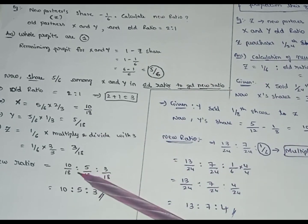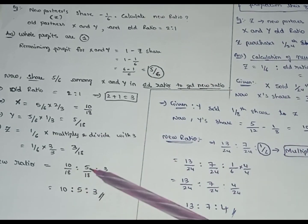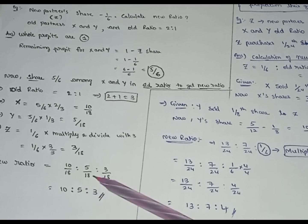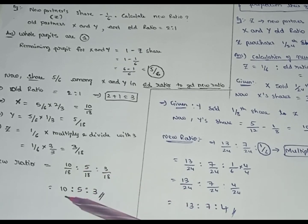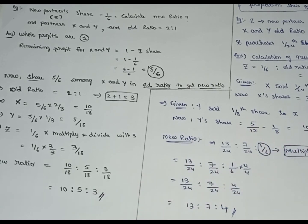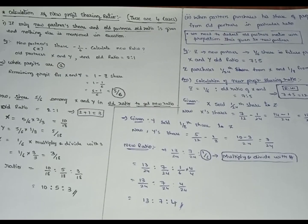The new ratio is 10 by 18 is to 5 by 18 is to 3 by 18. Simplifying, the new ratio is 10 is to 5 is to 3. So the new profit sharing ratio of X, Y and Z is 10 is to 5 is to 3. This completes the first case.